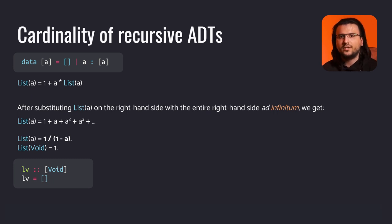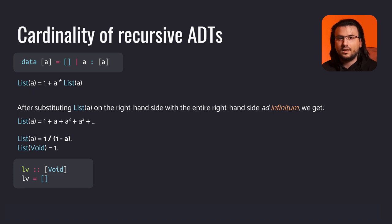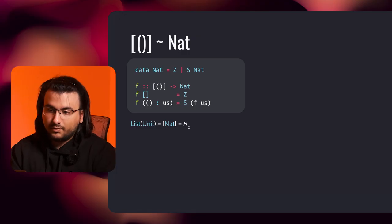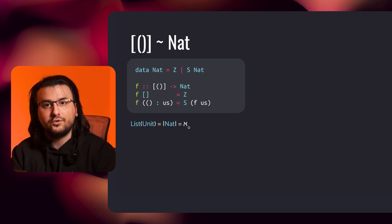This is the geometric series with a closed form of 1 over 1 minus a. Of course, it converges if the absolute value of a is less than 1, and there's only one data type satisfying this inequality — void. Indeed, there exists only one way to construct a list of voids: by passing the empty list constructor. If we substitute unit for type parameter a, there will exist an infinite number of elements of type list of units. The final example of isomorphic types: list of units and the Peano naturals. Both have cardinalities equal to aleph null, and we can construct a bijection between them.